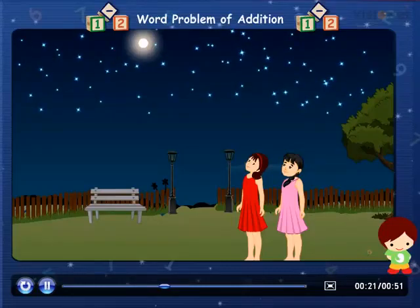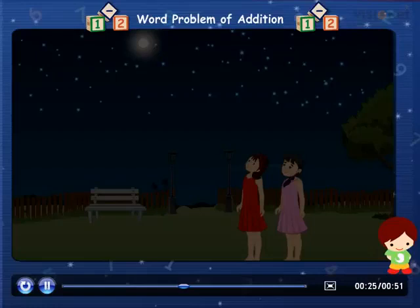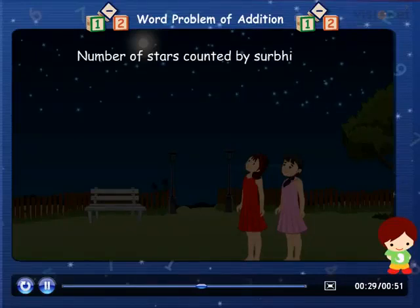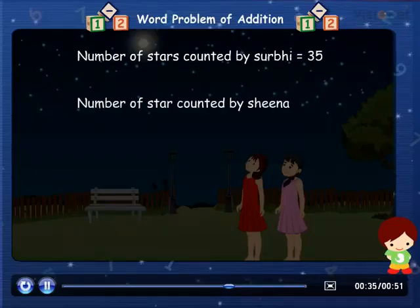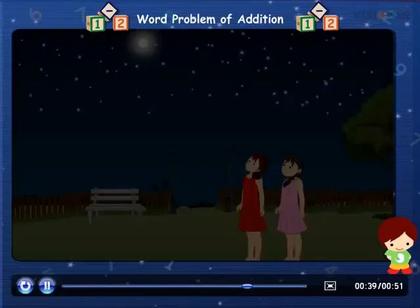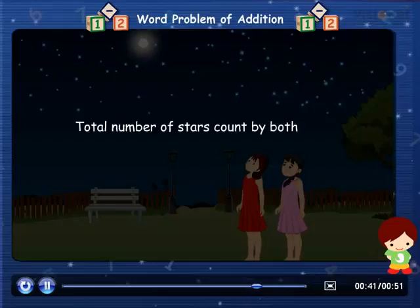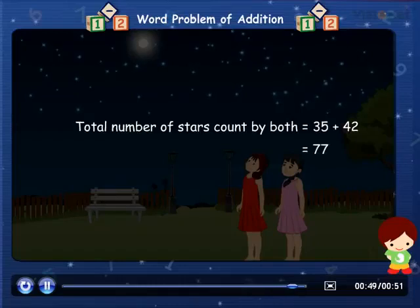They added the number of stars counted by both girls. Number of stars counted by Surabhi is equal to 35, and number of stars counted by Sheena is equal to 42. So the total number of stars counted by both is equal to 35 plus 42, which is equal to 77.